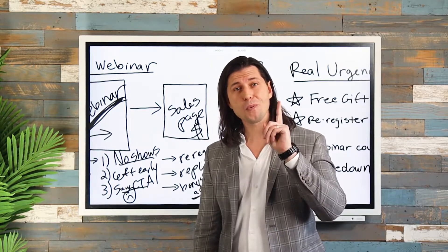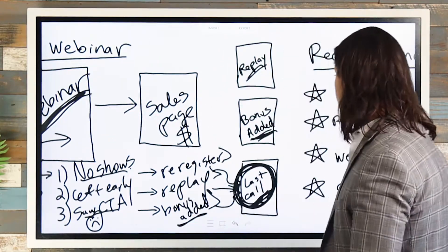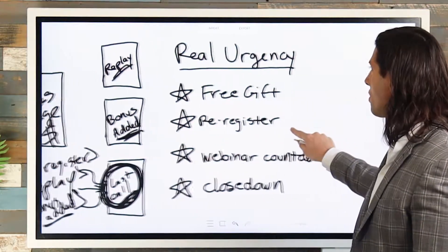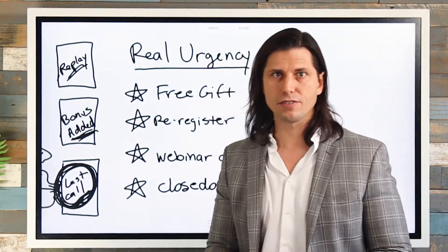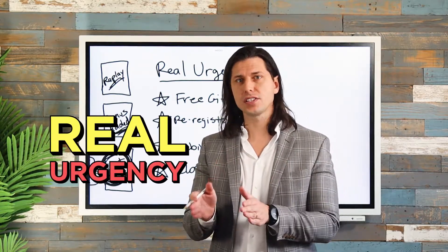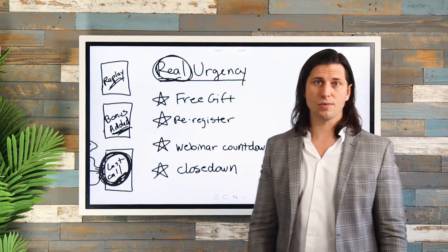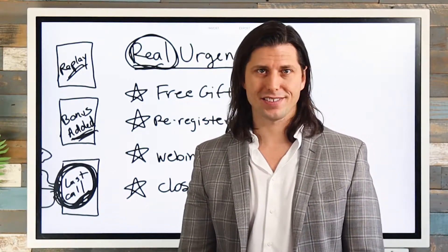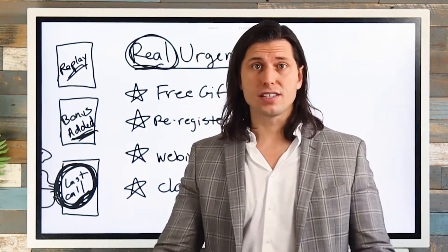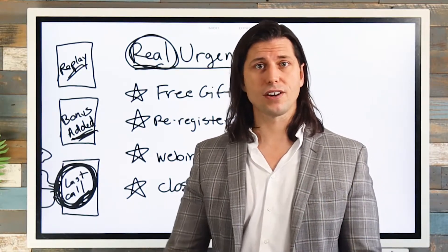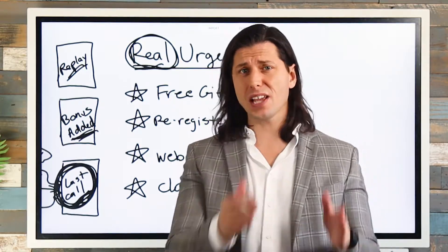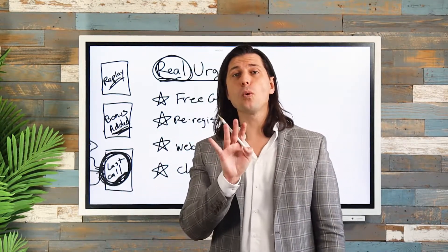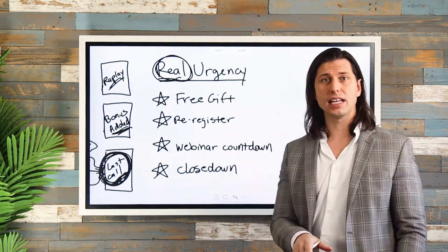Now I want to talk about the number one secret to really crushing it with automated webinars — and it's really the most important thing: if you want to see an instant increase in your conversion rate, you have to put in real urgency or scarcity, and I put the word 'real' here as an absolute keyword. The last thing you ever want to do is say the offer closes down in three days when it doesn't. First of all, it's BS and nobody likes that. Second of all, it's frankly illegal — you can get into trouble with the Federal Trade Commission. You want to build a real relationship with people because just because they don't buy from you at first doesn't mean they won't buy from you later. As soon as they know you're full of it, you've ruined the relationship.